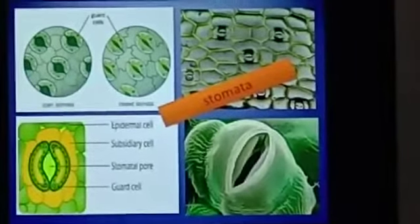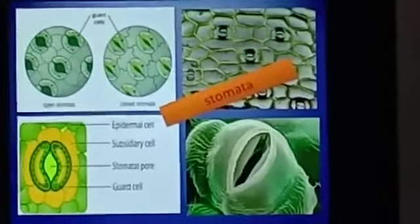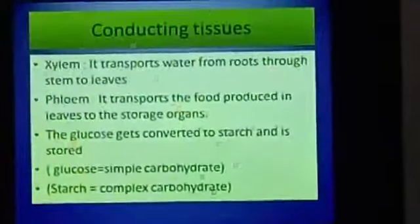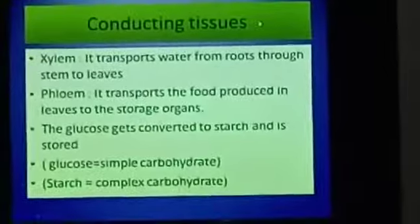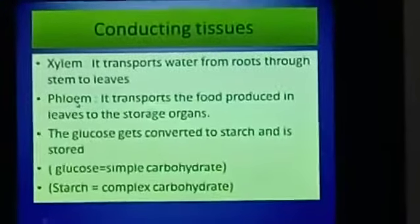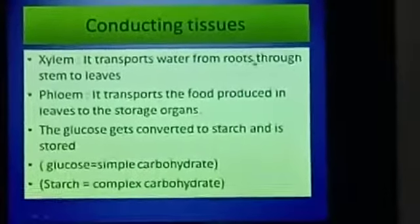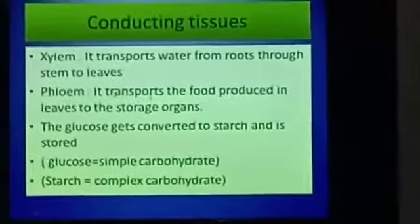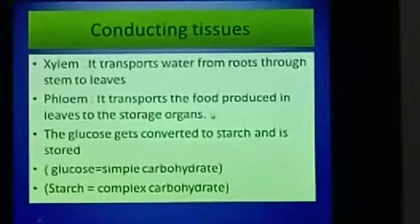Water and food need to be transported in the plants. This is done by conducting tissues. The two conducting tissues present in the plants are xylem and phloem. Xylem transports water from roots through the stem to the leaves. Phloem transports the food produced in the leaves to the storage organs.